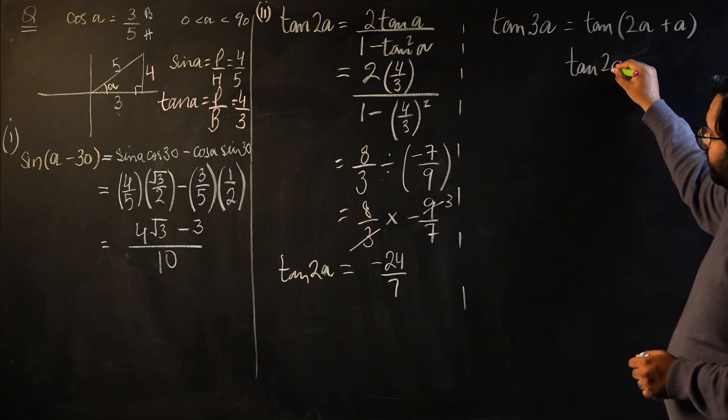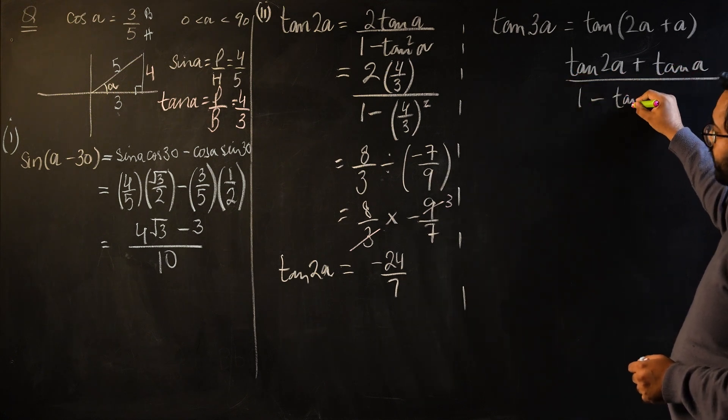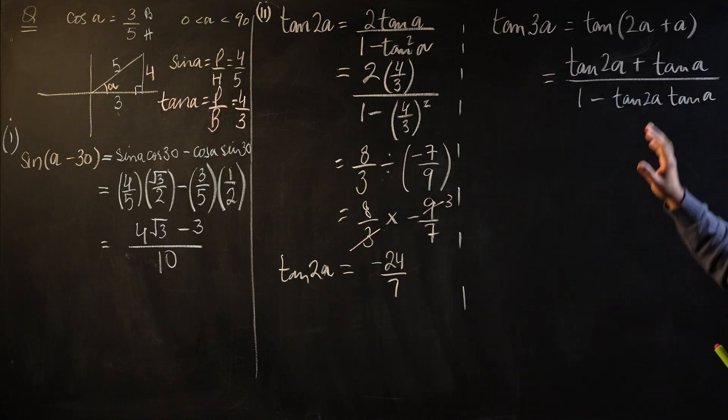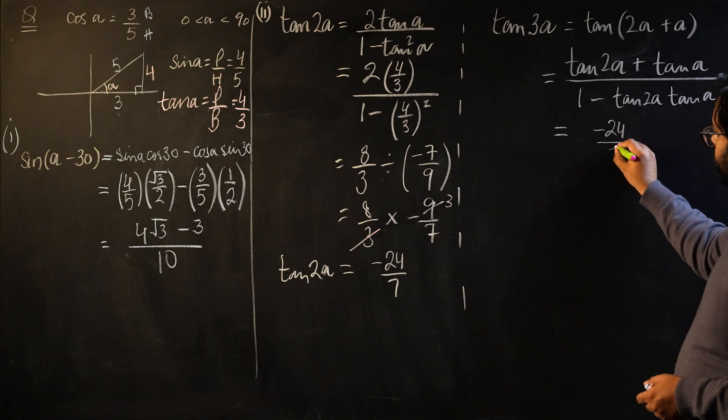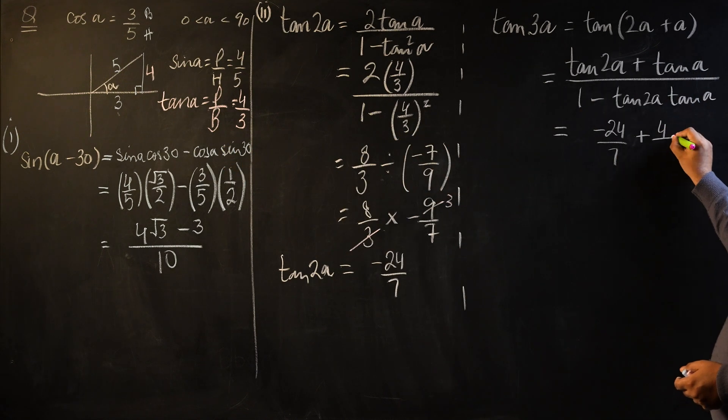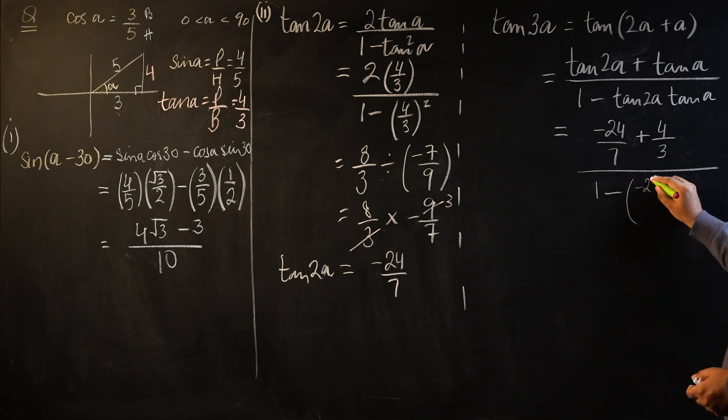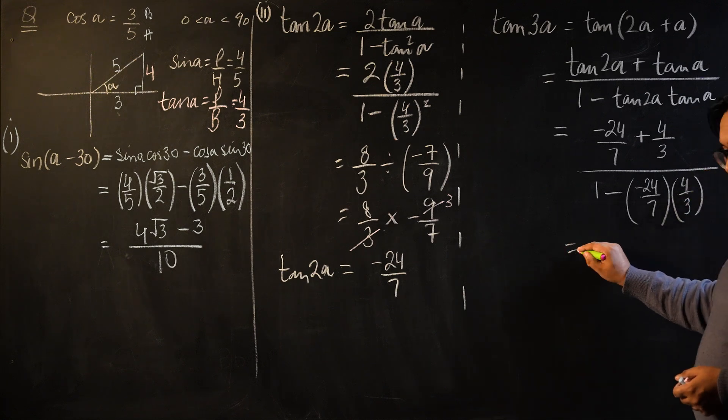This will become tan(2α) + tan(α) over 1 - tan(2α)tan(α). Once you've reached this step, it's really relieving to know that we know the value of all three of these. Let's start plugging in the values. Tan(2α) was -24/7 plus tan(α) which is 4/3, divided by 1 minus tan(2α) which is -24/7 and tan(α) is 4/3.